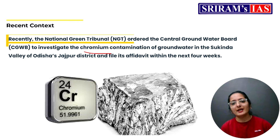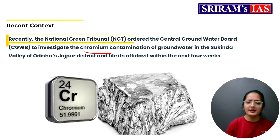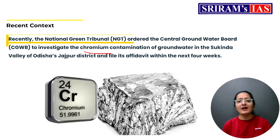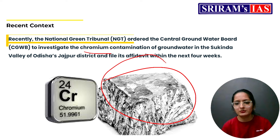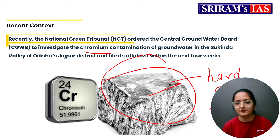What is chromium? Chromium is a natural element found in rocks, animals, plants, soil, volcanic dust, and gases. It is hard, grey, and solid with a metallic luster — as you can clearly see in the picture.